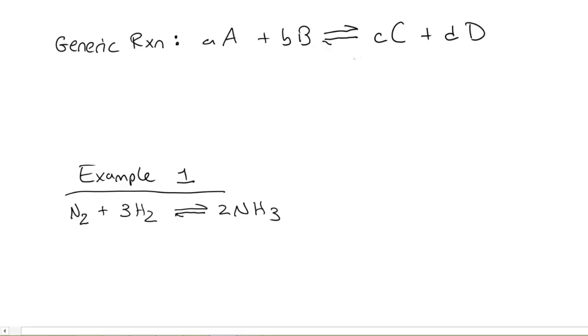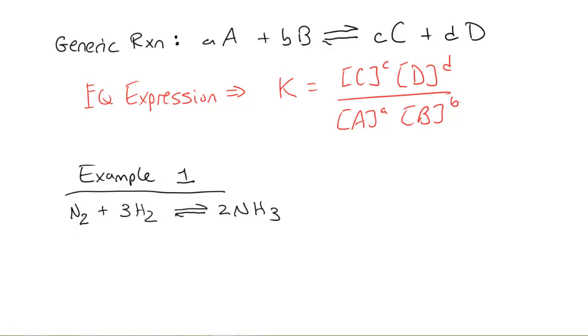And that whole thing is called the equilibrium expression. So, here's some generic reaction. We would say then our equilibrium expression, we would write that as this: K is equal to the concentration of C to the C power, D to the D power, divided by A to the A power, and B to the B power. So, try the example here real quick. Go ahead and pause the video and give it a try, and I will also then bring up in a few seconds the answer that I have.